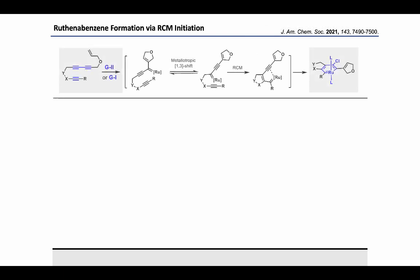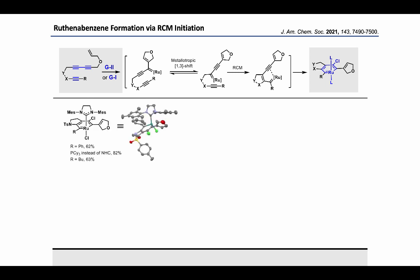Next, the reaction profile for ruthenobenzene formation via RCM initiation was investigated. We can bring about variation in the tether by introducing an ionamide linker, leading to the synthesis of a series of ruthenobenzene indolenes. We can also vary the R-substituent by changing from butyl to a phenyl group, or change the ligand by introducing PCy3 instead of the NHC ligand using Grubbs 1. This complex is 14-electron at ruthenium and has a distorted tetrahedral geometry.